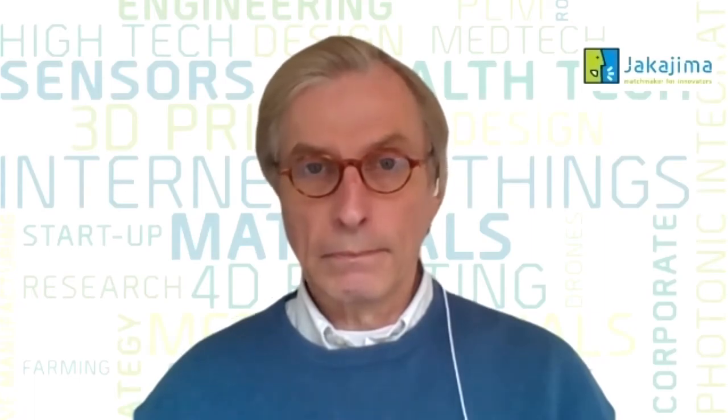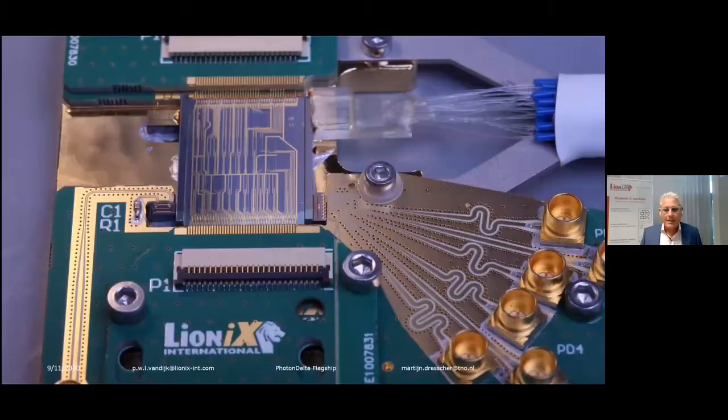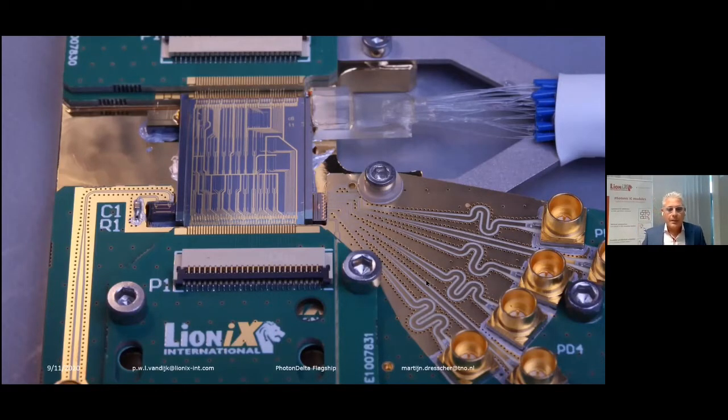So what you see here is a system that we have been developing in the last 10 years within Lyonics International. It's called an optical beam forming network. And what you see in the middle is the bigger chip, which is actually a silicon photonics processor based on silicon nitride waveguides, which we manufacture here in Enschede.